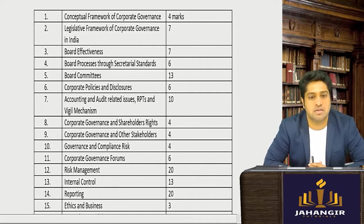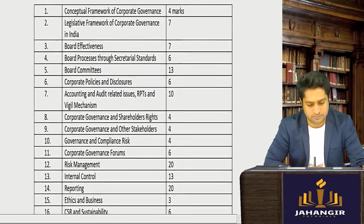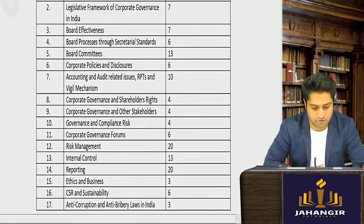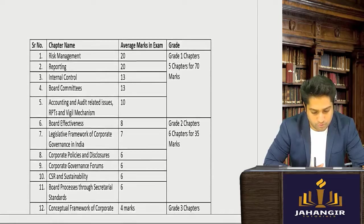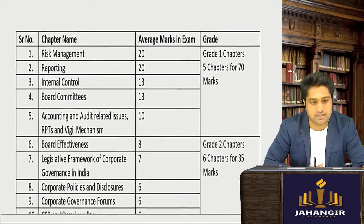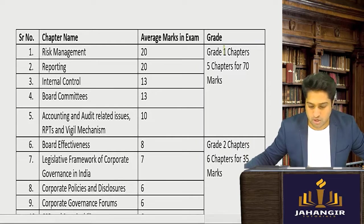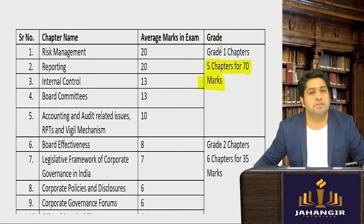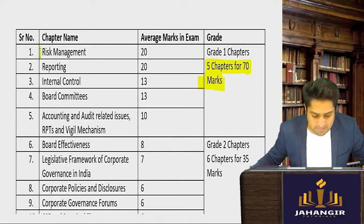Now I'll tell you the strategy for studying this particular subject. The subject is divided into three grades covering the most important chapters. There are five chapters in grade one that come for around 70 marks in your paper. With options, it would be around 130 to 140 marks.